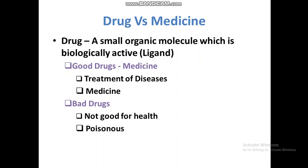We have different terminologies in medicinal chemistry. First, what is the difference between drug and medicine? A drug is a small organic molecule which is biologically active. There are two types: good drugs, which are also known as medicines, used for the treatment of diseases; and bad drugs, which are not good for health or are poisonous — most of these damage the central nervous system, like caffeine, morphine, or opium.